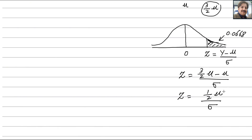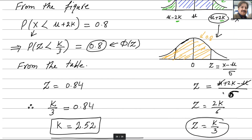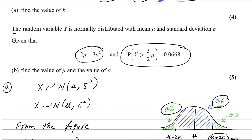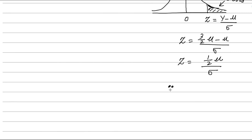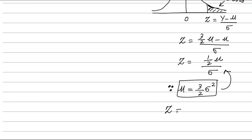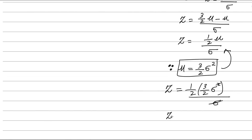From the question, we can get the value of mu: since 2mu equals 3 sigma squared, mu equals 3 over 2 sigma squared. Plugging this into the Z expression: Z equals (1/2) times (3/2 sigma squared) divided by sigma. The sigma cancels with sigma squared, giving Z equals 3 over 4 sigma.